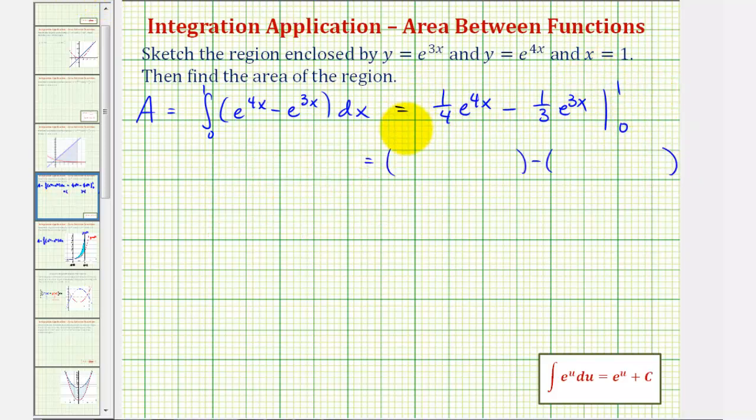So when x equals 1, we have 1 fourth e to the 4th minus 1 third e to the 3rd. And then when x is 0, we have 1 fourth e to the 0 minus 1 third e to the 0.